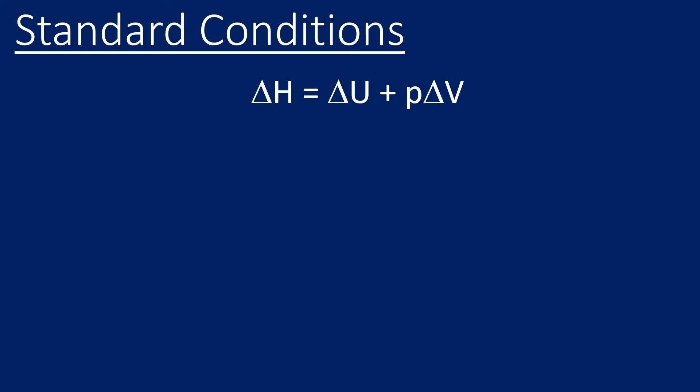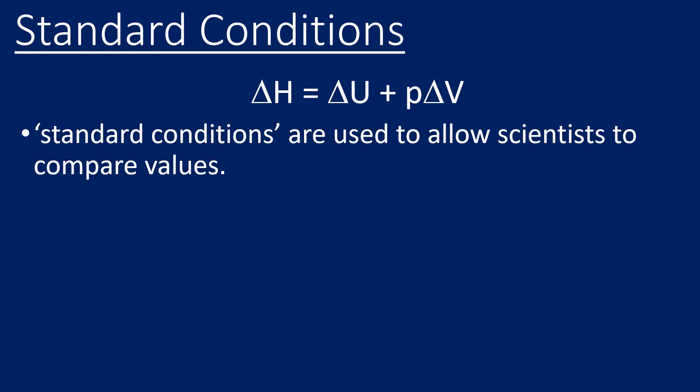So the final thing we need to worry about in this video is what are standard conditions. Standard conditions are used to allow scientists to compare values, because if experiments were carried out under different conditions, their enthalpy changes may well be different. The agreed standard conditions are 298 Kelvins for temperature, 100,000 pascals for pressure,